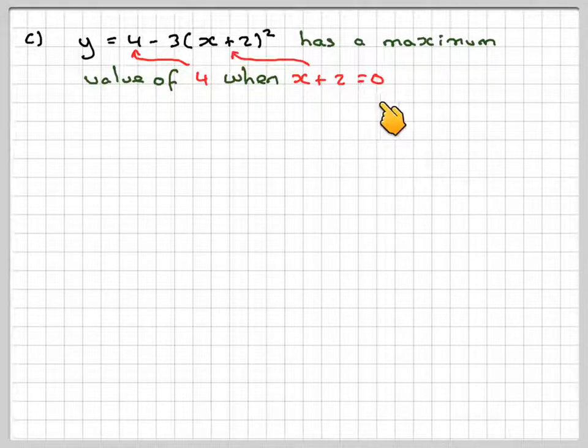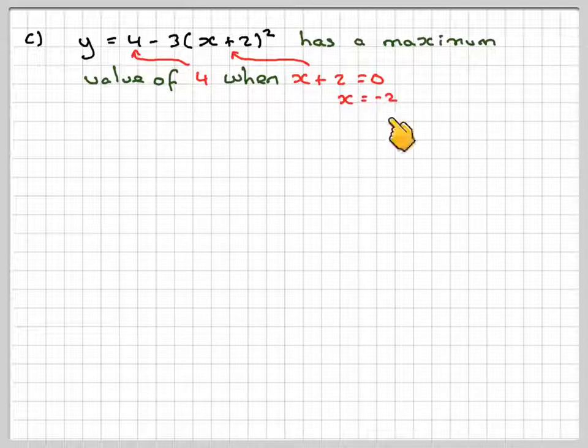So it's when x + 2 = 0, when x = -2, because we get -2 in here. -2 + 2 gives me 0, 0² gives me 0, 0 × 3 is 0, and then 4 - 0 will give me 4.